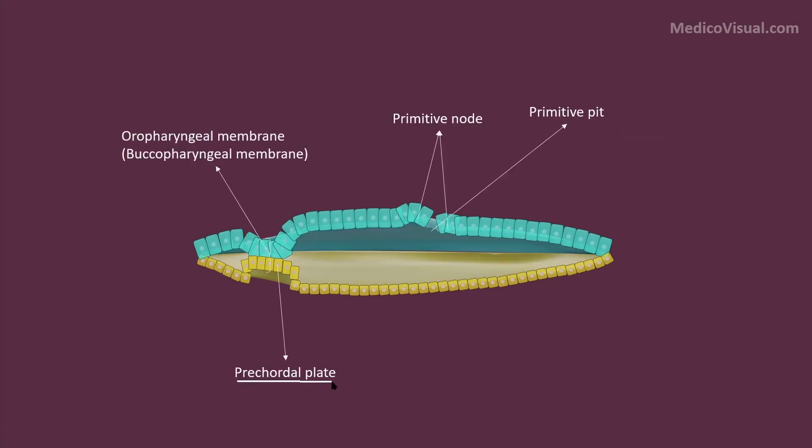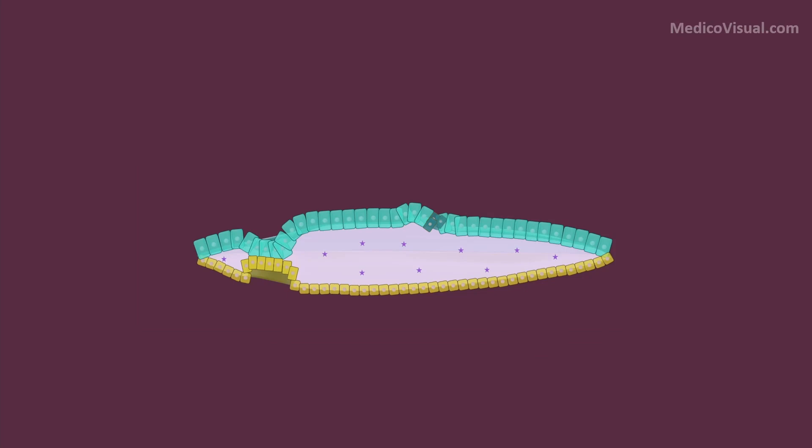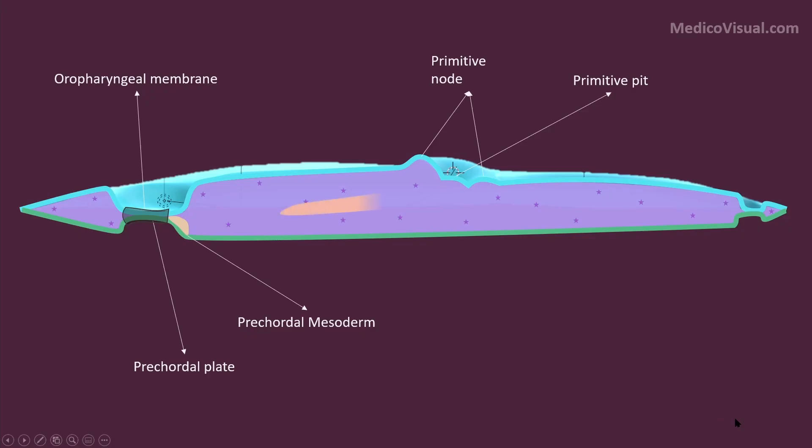The endodermal part of oropharyngeal membrane is called precordal plate. The first few of these ingressing cells move forward in the oropharyngeal membrane. Here they displace the original precordal plate laterally and these new population of cells now form the definitive precordal plate. Cells at the caudal end of precordal plate proliferate and form a new layer dorsal to it called precordal mesoderm. As it happens, the oropharyngeal membrane is now restricted to cranial end only.